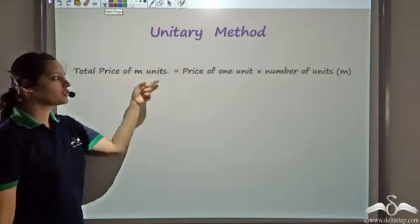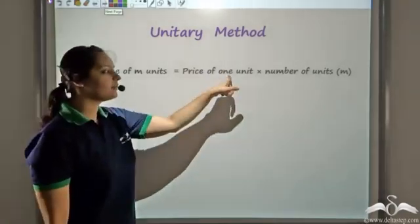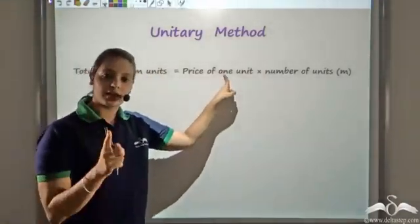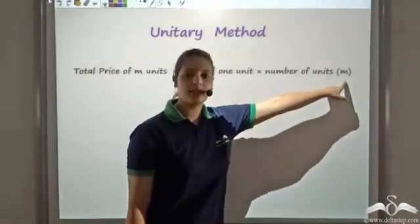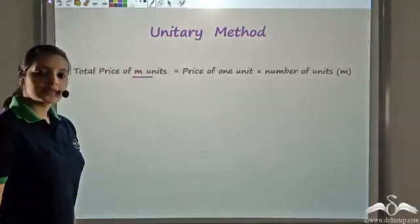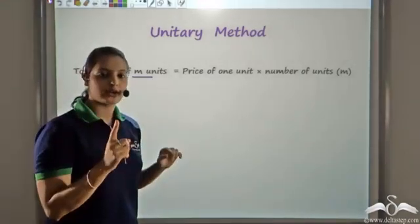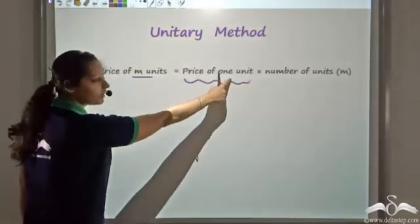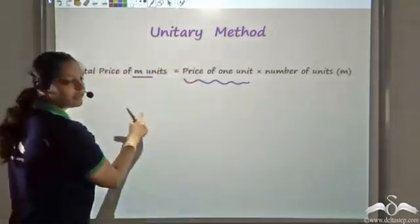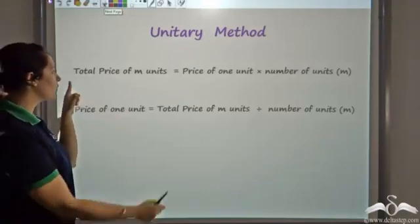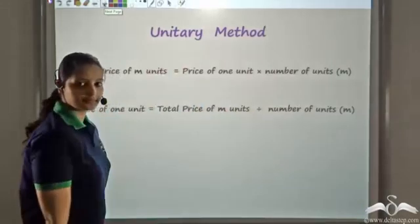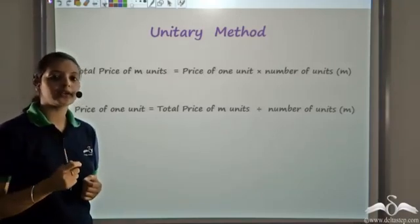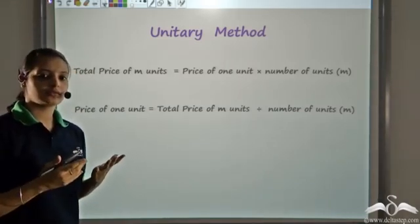If you know the price of 1 unit, you can find the total price by multiplying the price of 1 with the number of units. So if you want to find the price of m units, you need to know the price of 1 unit and multiply it by m. Similarly, the price of 1 unit is the total price of m units divided by the number of units. This is how you use the unitary method — to find either the total price when you know the unit price, or to find the unit price when you know the total cost and number of units.